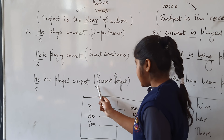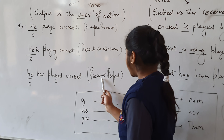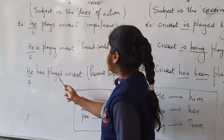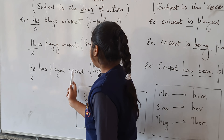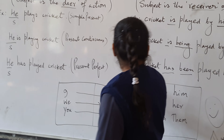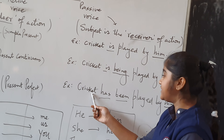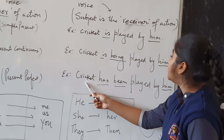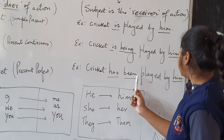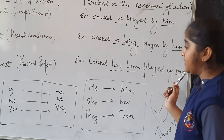This sentence is present perfect: 'He has played cricket.' And when we change it into passive voice, it changes into 'Cricket has been played by him.'